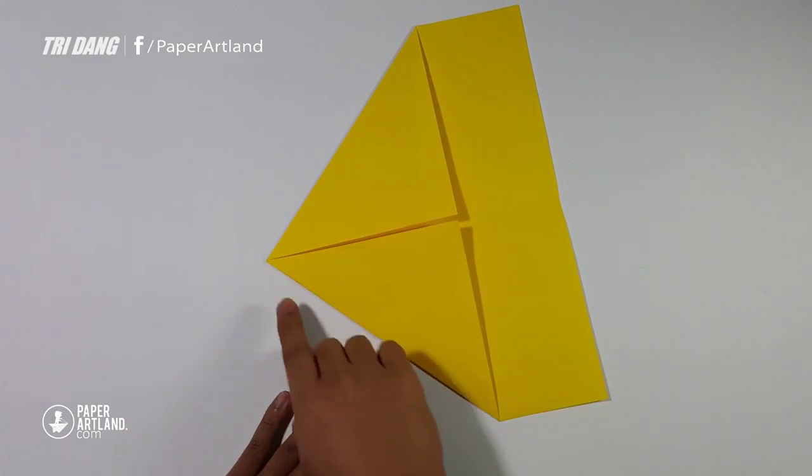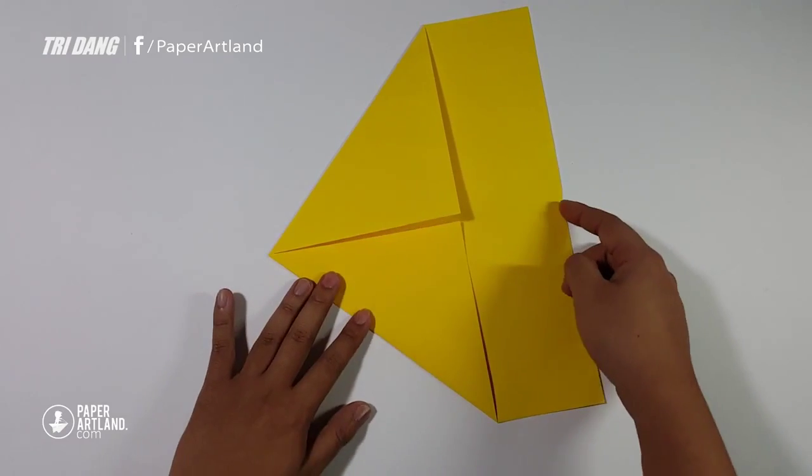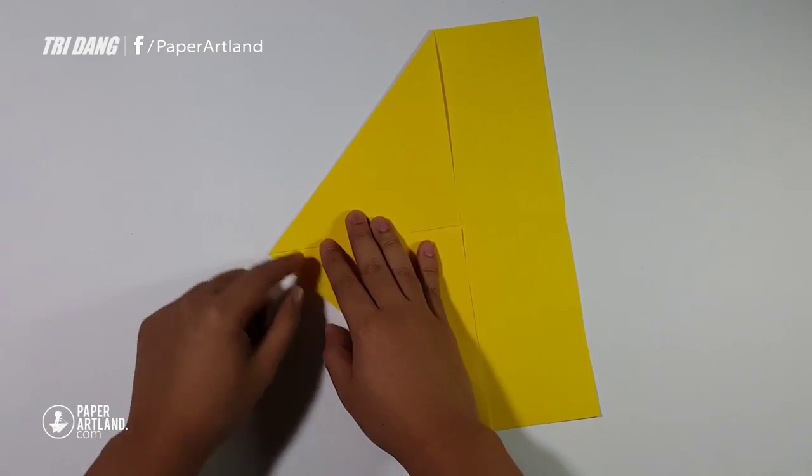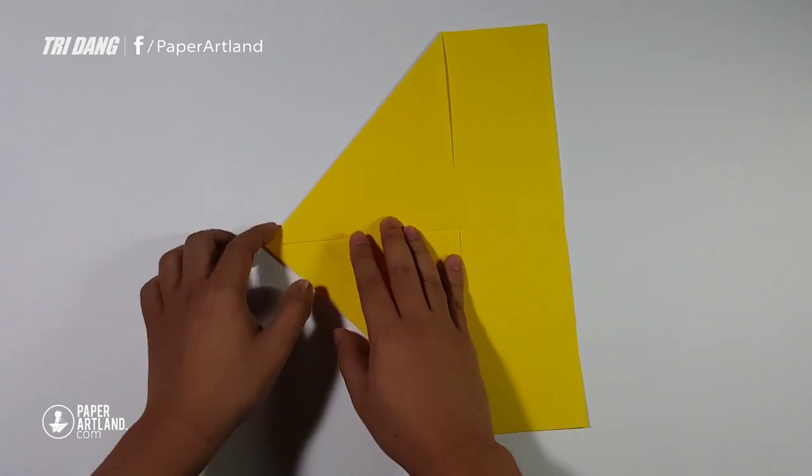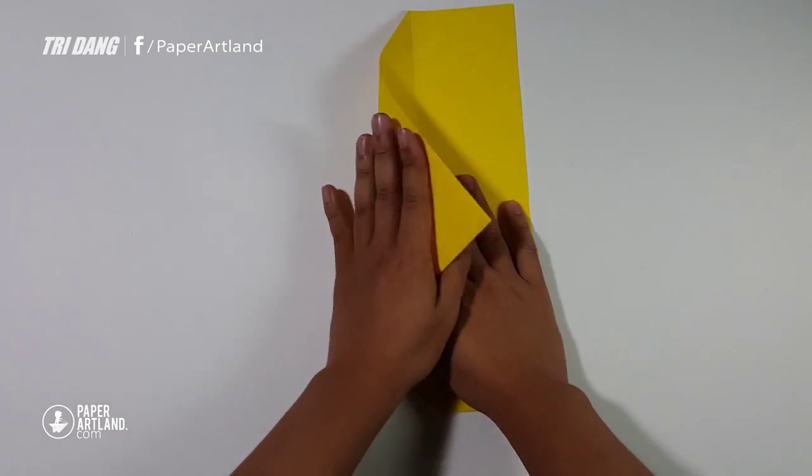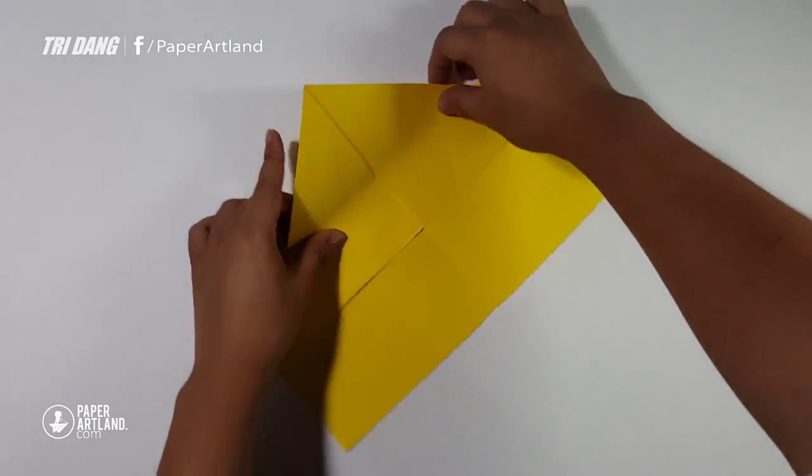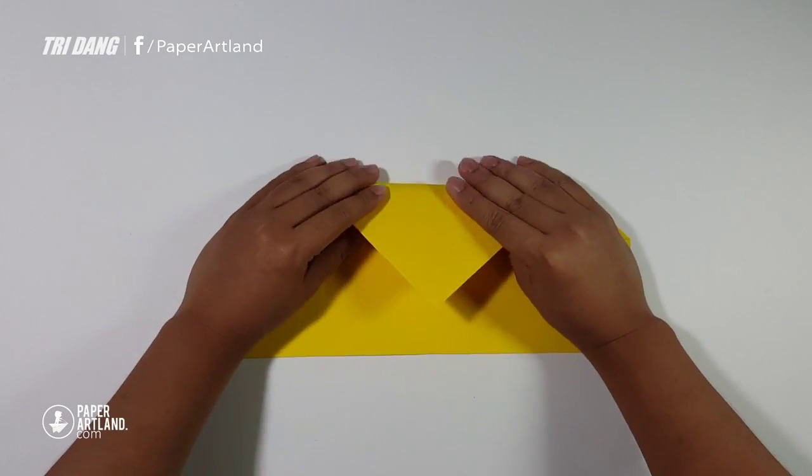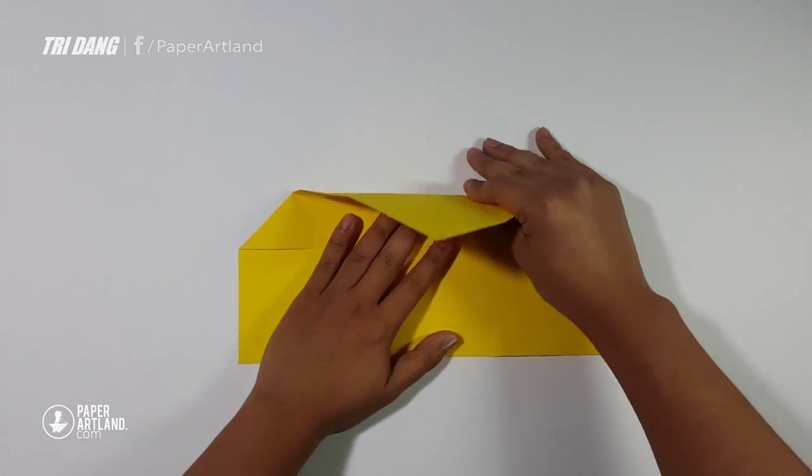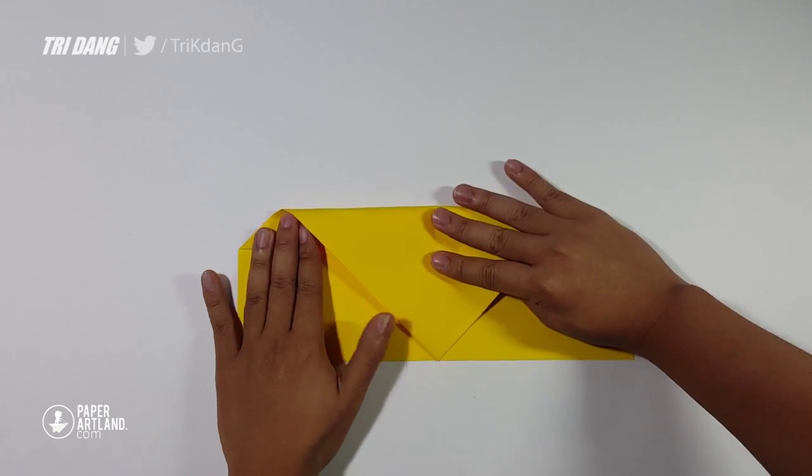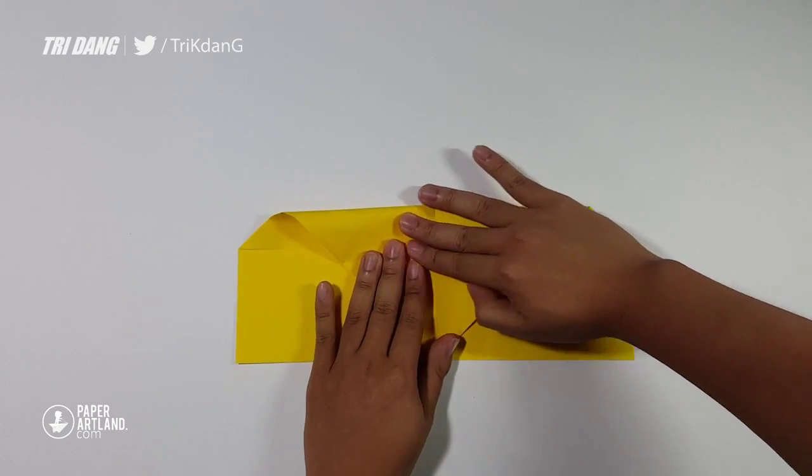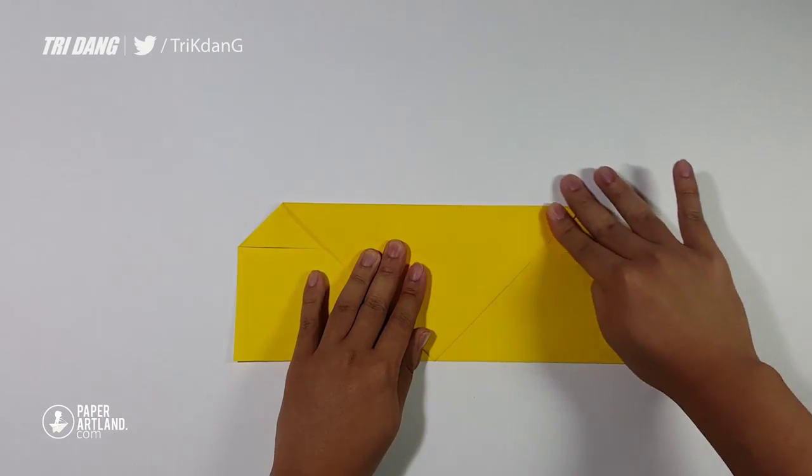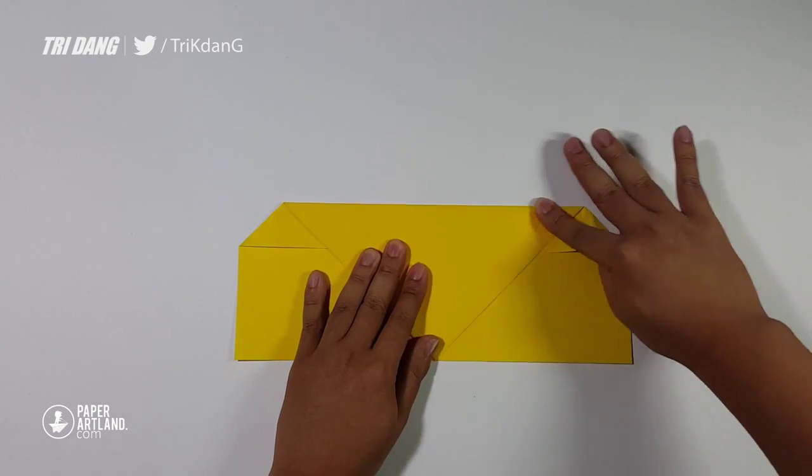Next step, I will start from the tip here. Fold straight down to the bottom, and I will use the center line here as my reference. I will turn the paper this way so I can fold it easier. I curve the paper and fold slowly until the tip touches the bottom, and I will make a crease here.